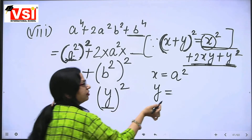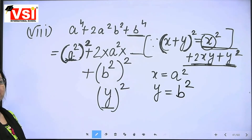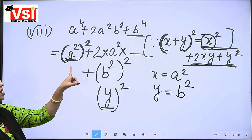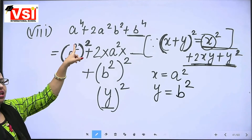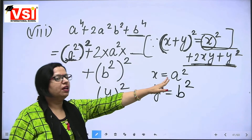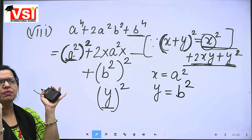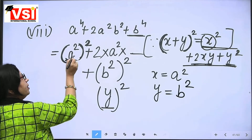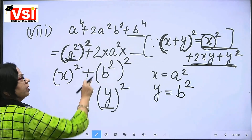B square. Earlier when we wrote X square, we gave X the value A square. So Y value should be B square. We just need to change — we had to give it in X whole square format. Then what to write? 2XY, then Y whole square — only that much is done.